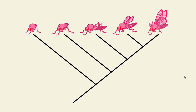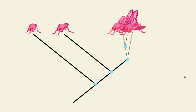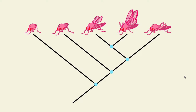One thing that's really important to know about trees is that the order of organisms across the top doesn't tell you anything. The key information is in the branch points. If we rotate the branches around a node, the tree still shows the same relationships. All of these trees, because the nodes are in the same relative order, are equivalent.